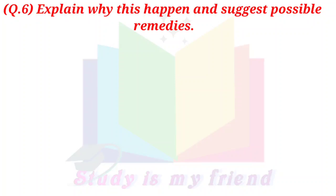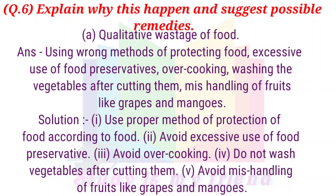Question 6: Explain why this happens and suggest possible remedies. A. Qualitative wastage of food. Answer: Causes include using wrong methods of protecting food, excessive use of food preservatives, overcooking, washing vegetables after cutting them, and mishandling of fruits like grapes and mangoes. Solutions: Use proper methods of food protection, avoid excessive use of preservatives, avoid overcooking, do not wash vegetables after cutting, and avoid mishandling fruits.